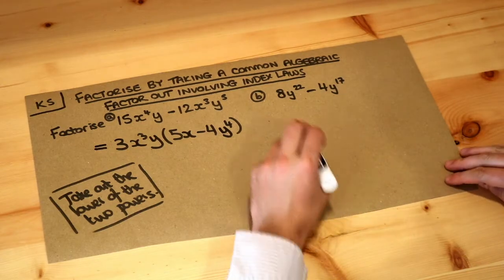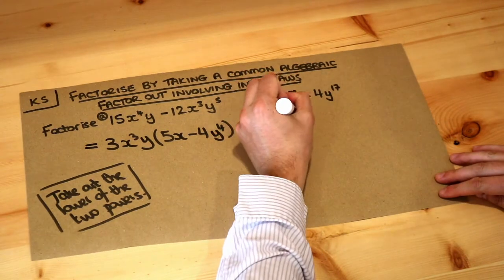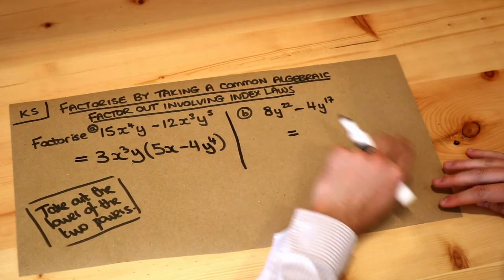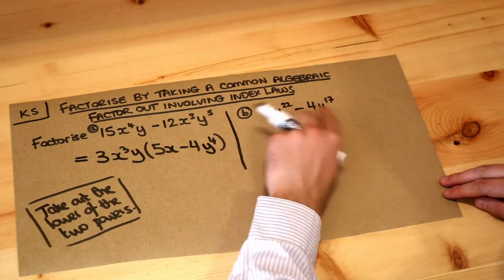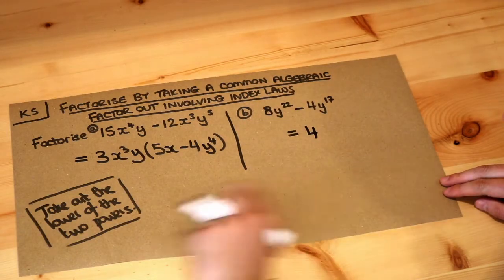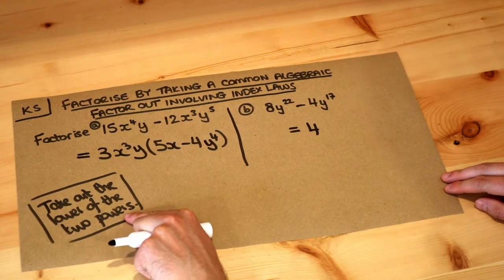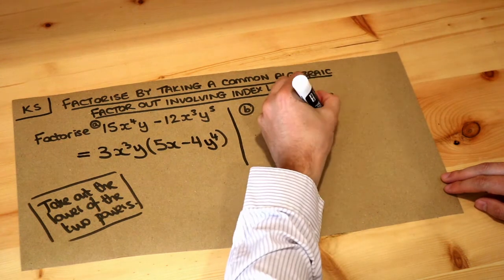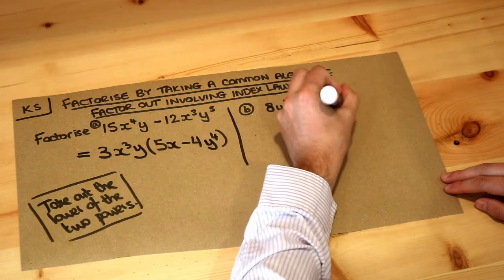So that's the first one, what about the second one? Again we look at the numbers first, so 8 and minus 4, what's common? Well, 8 and 4 have a common factor of 4. And then we always take out the lower of the two powers, so y to the 17, y to the 22 - y to the 17 is the lower power, and then let's open a bracket.